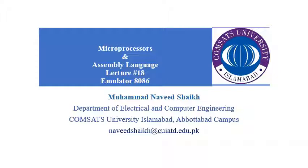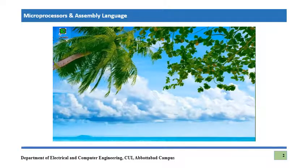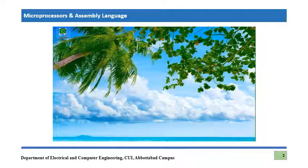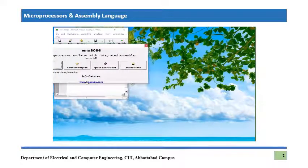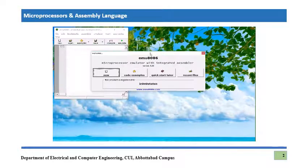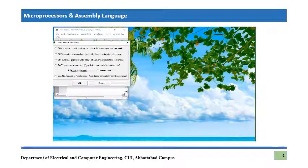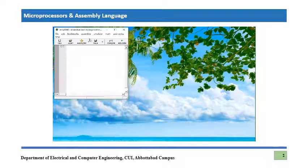Let's proceed to the topic. This is the icon of EMU 8086 and we are going to double-click on it. We have four different options to choose — we use the 'New' option. Again we have various options and we will use 'Empty Workspace'. We choose it and press OK. So this is the workspace where we are going to write our assembly instructions.